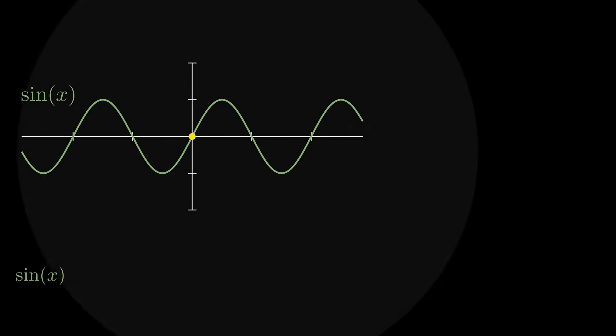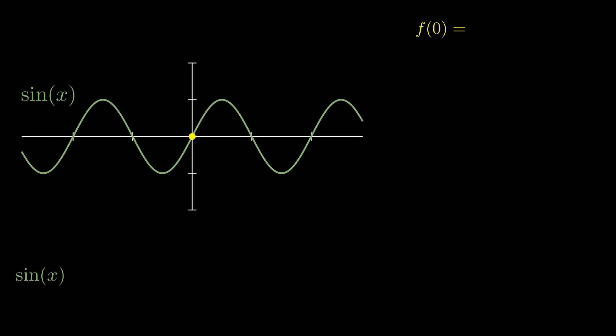We're going to start by finding the Maclaurin polynomial of sine of x, which using Taylor's formula, the approximation will start at f of zero, which is just the sine of zero, which is just zero. So there's your first term. Then the first derivative at zero, which is the cosine of zero, and that's one. So there's your slope of the tangent line for that particular time.